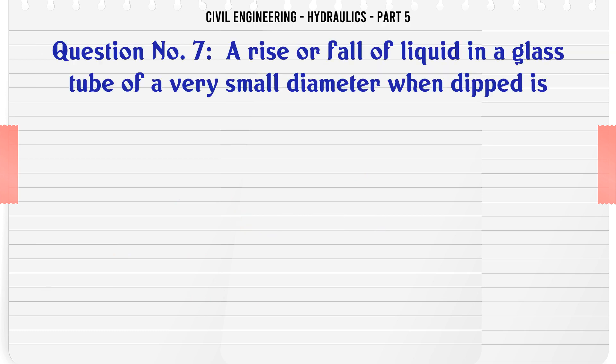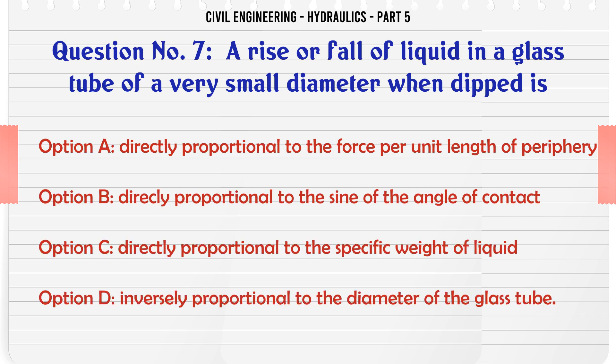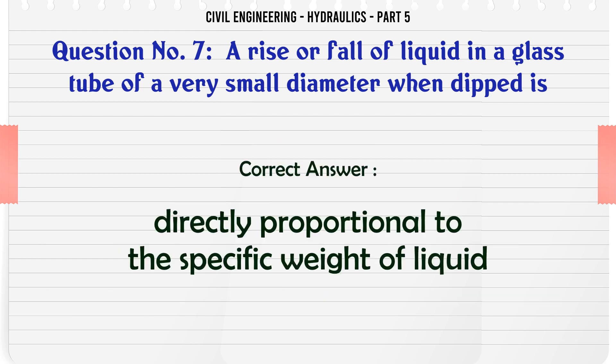A rise or fall of liquid in a glass tube of very small diameter when dipped is: A. directly proportional to the force per unit length of periphery, B. directly proportional to the sign of the angle of contact, C. directly proportional to the specific weight of liquid, D. inversely proportional to the diameter of the glass tube. The correct answer is: directly proportional to the specific weight of liquid.